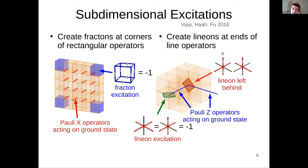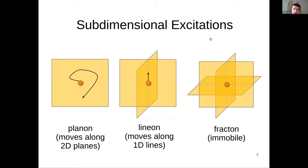In the magnetic sector, using a string of Z operators creates excitations at the ends of the string, but also excites cross operators where the string bends. This means these excitations are line-ons — they can only move in a straight line; changing direction leaves behind another excitation. More generally, type 1 gapped Fracton order has excitations: plane-ons (move in planes), line-ons (move along lines), and immobile Fractons.